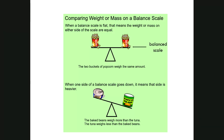When we use a balanced scale, just to review: when the balanced scale is flat, that means the weight on both sides is equal. Here these two buckets of popcorn weigh the same amount — they're equal in weight. When one side of the balanced scale goes down, that side is heavier. So in this picture, the baked beans weigh more than the can of tuna, or you could say the can of tuna weighs less than the baked beans — the baked beans are heavier and the tuna is lighter.